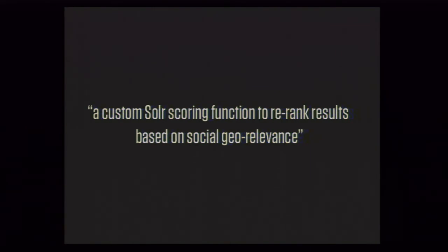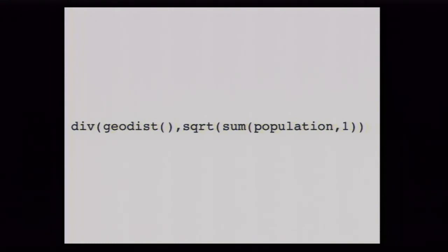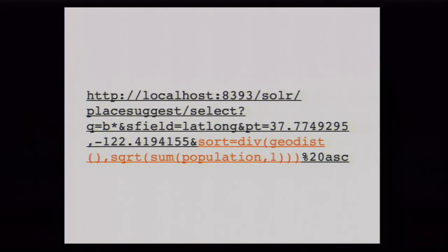The scoring function looks something like this: take the distance and divide it by the square root of the population. We tried dividing by the population — didn't like the results. We tried the logarithm of the population — didn't like that either. Squaring it worked pretty well. This uses a custom Solr 3.1 install; 3.1 actually has working geospatial extensions now. You just throw a sort in there and you have custom ranking on population and distance.